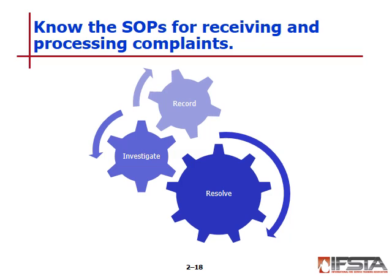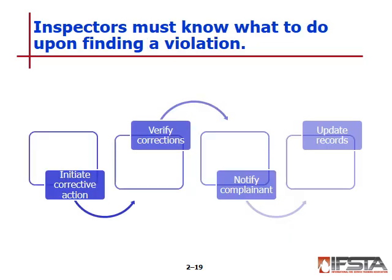An inspector must carry and display appropriate identification and explain the purpose of an unannounced inspection. Upon finding a code violation, an inspector must initiate the process that leads to corrective action. Inspectors should be prepared to deal with negative attitudes and maintain a professional demeanor even if the other person does not. When a complaint has been resolved, the person who initiated it must be formally notified and thanked — this acknowledgement confirms their contribution to the community's safety.